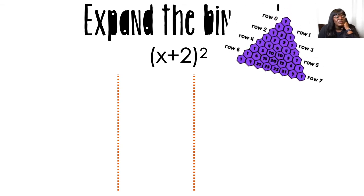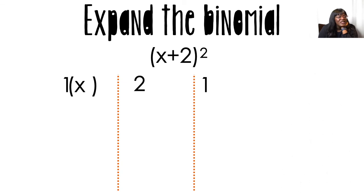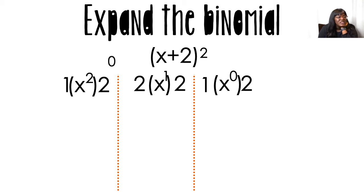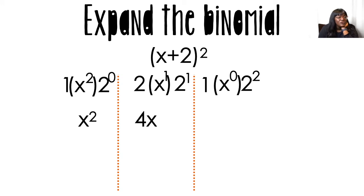I'm going to do the same problem with the column method. Same problem, looking at Pascal's triangle. I need row two because my exponent is two, so coefficients are 1, 2, 1. Take the X, put an X, put an X. Then put a 2, 2, 2. X exponents: 2, 1, 0. And 2 exponents: 0, 1, 2. Simplifying: 1 times X squared times 2 to the zero gives X squared. Two times X times 2 is 4X. And 1 times 1 times 2 squared is 4. Final answer: X squared plus 4X plus 4.